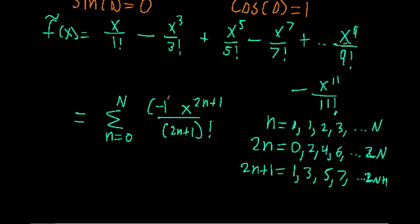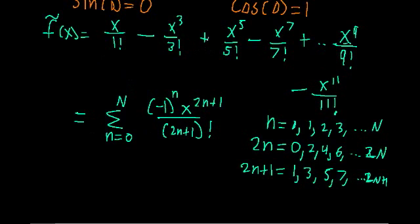We also need to track the sign, since it flips every time: positive, negative, positive, negative. Using negative one to the n: when n equals zero, it's negative one to the zero, which is one — positive. When n is odd it's negative, when n is even it's positive. So this compact series notation describes the entire long polynomial, which is our approximation for sine x.